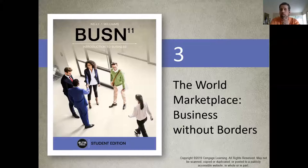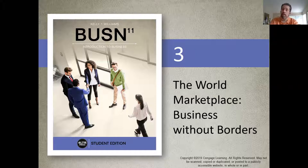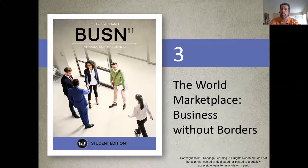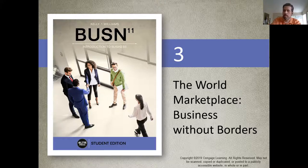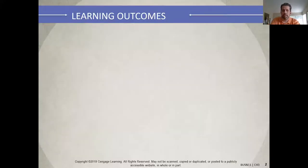We're talking about the world marketplace — specifically, doing business in a global economy. The documentary you guys watched last week, 'Inside Job,' definitely demonstrated how our economy is so interdependent with the rest of the world's economy. We all thrive when everyone else is thriving. There is definitely a symbiotic relationship — a shared relationship — between all the different economies in the world. This chapter talks more about the international marketplace.